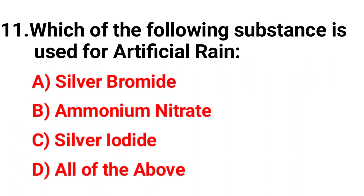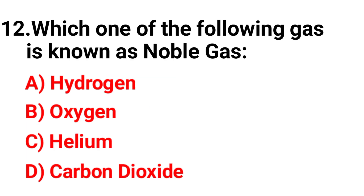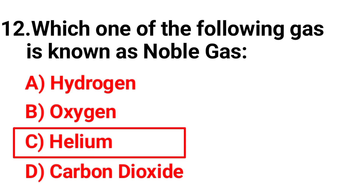Question 11: Which one of the following substances is used for artificial rain? The correct answer is silver iodide. Question 12: Which one of the following gases is known as noble gas? The correct answer is option C — helium.